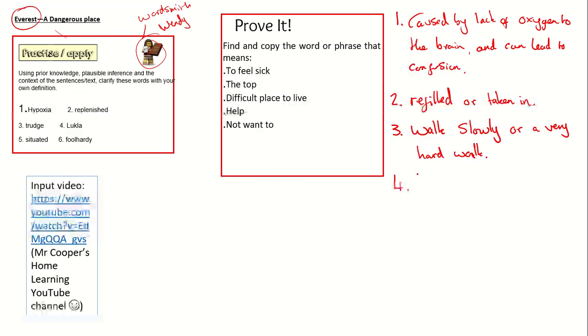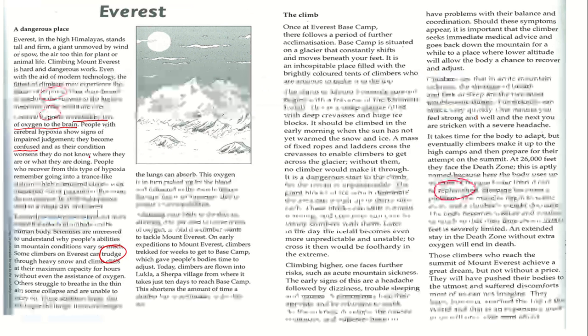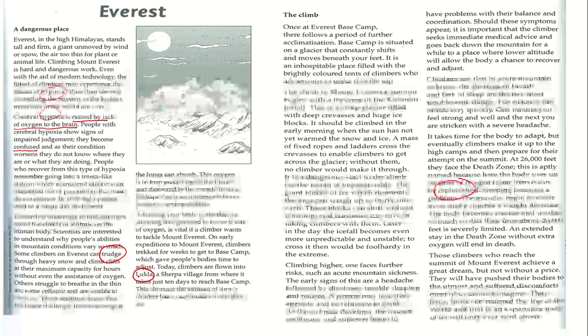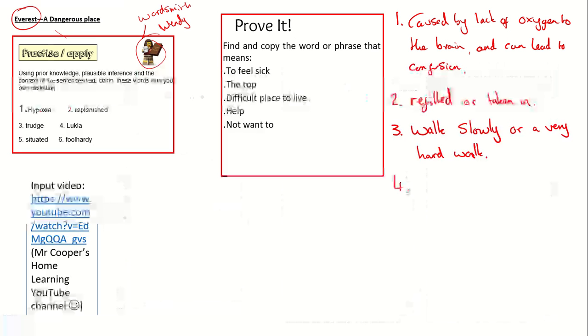Number four, Luckla. Now Luckla is, where is Luckla? Ah, here we go. Starts with the capital. Climbers are flown into Luckla, a sherpa village. Well, I'm going to say it's a place, a sherpa village. How do you spell sherpa? A sherpa village. That one's kind of more of a test of your understanding of your capital letters and your proper nouns, I suppose.